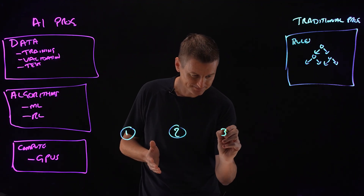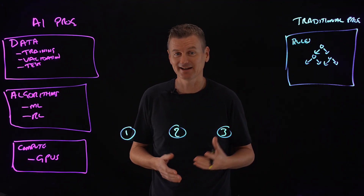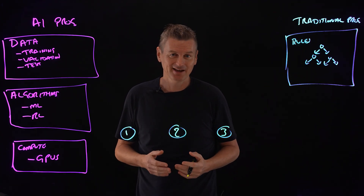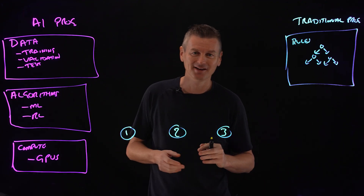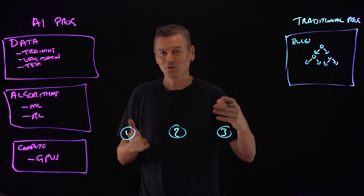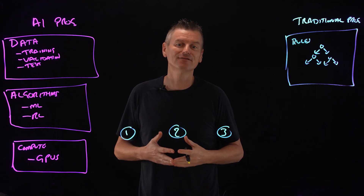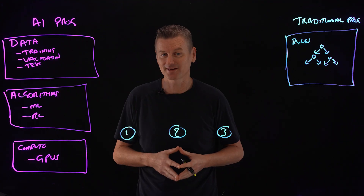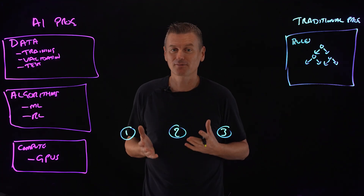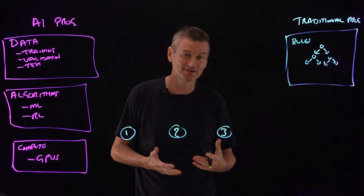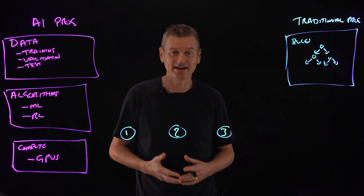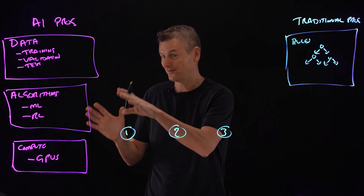And finally, number three: learning and data handling. Traditional programming is rigid — it relies on structured data to execute programs. In order to teach a program new information, the programmer must manually add new data or adjust those processes. Also, traditional programs may not be able to accommodate unforeseen scenarios without explicit programming for those cases. But because AI systems learn from vast amounts of data, they're better suited for processing unstructured data like images, videos, and natural language text. AI systems can also learn continually from new data and experiences, allowing them to improve their performance over time.